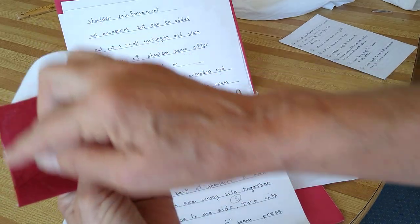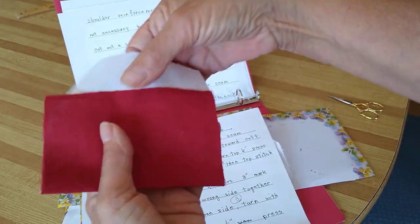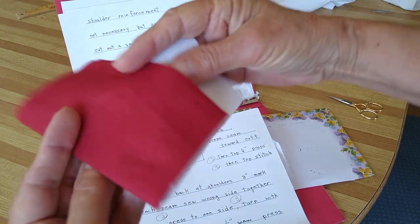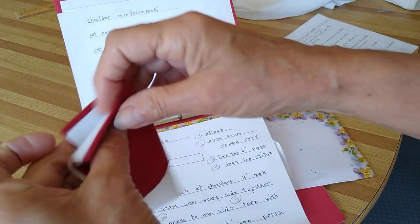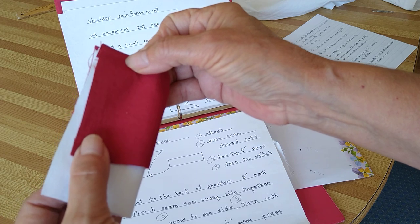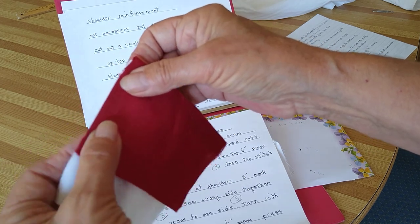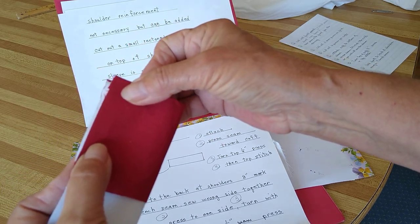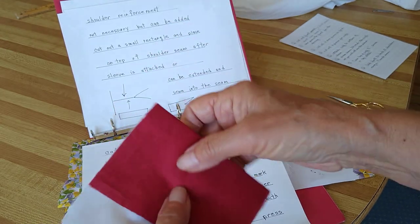Then stitch these side seams because you're going to be later on putting the wrong sides together and you're going to be stitching it. See how it comes like that? Stitch it down because you're going to be sewing it up like this, turning it, pressing it, and sewing it again, doing a French seam.